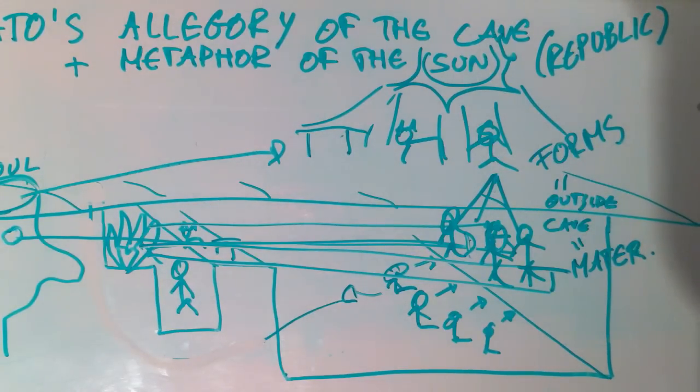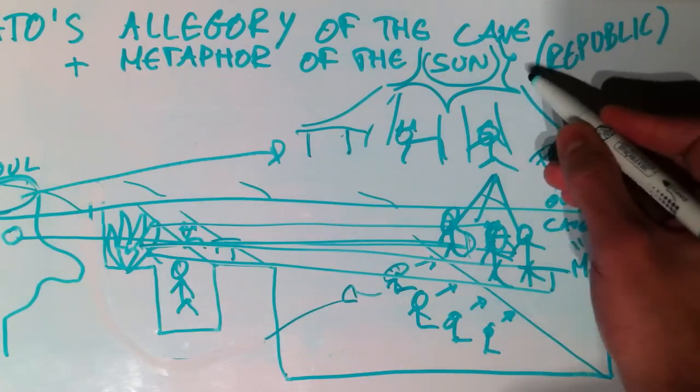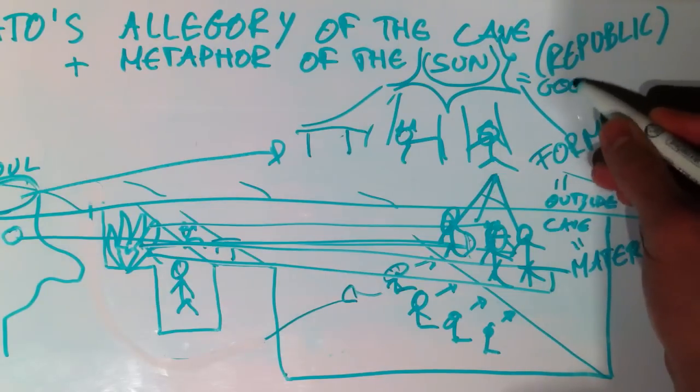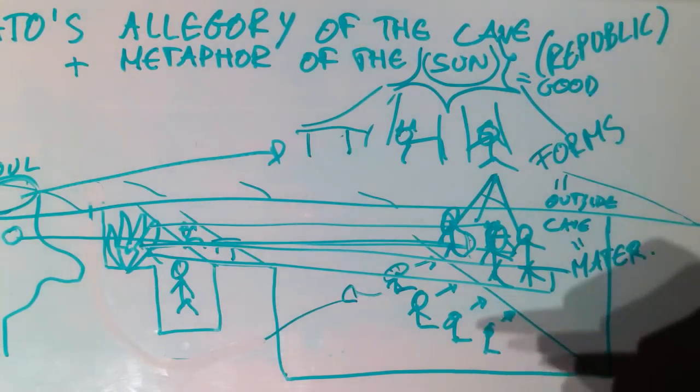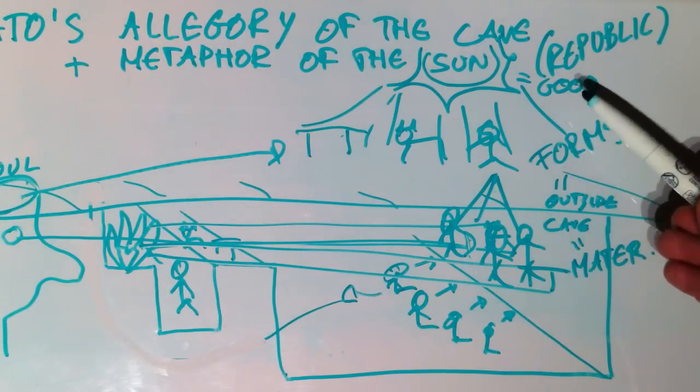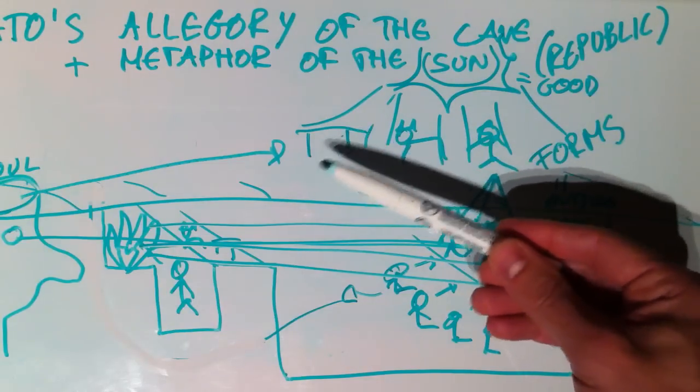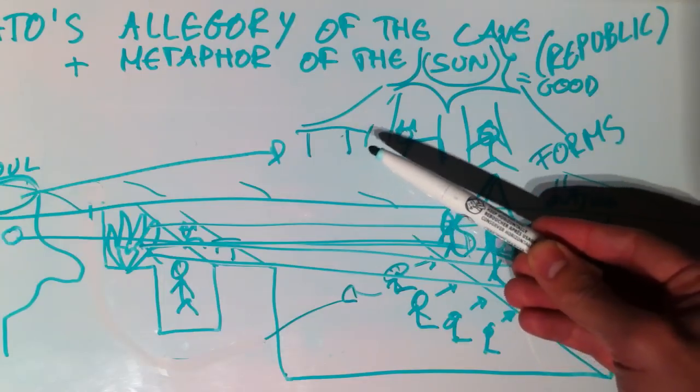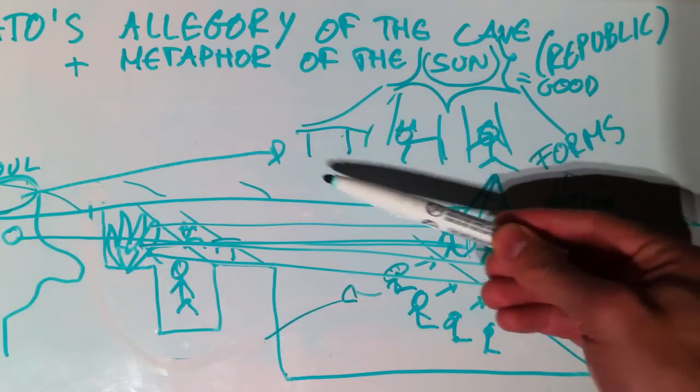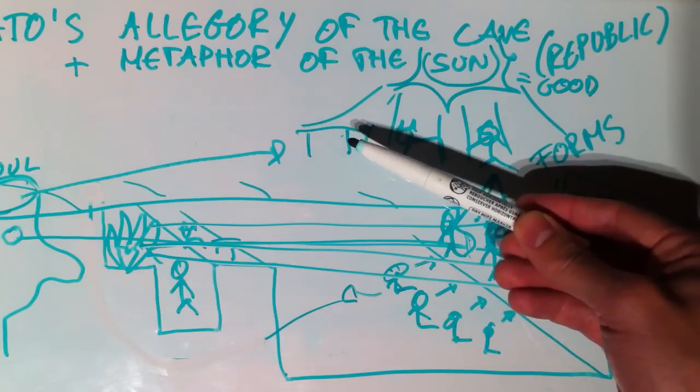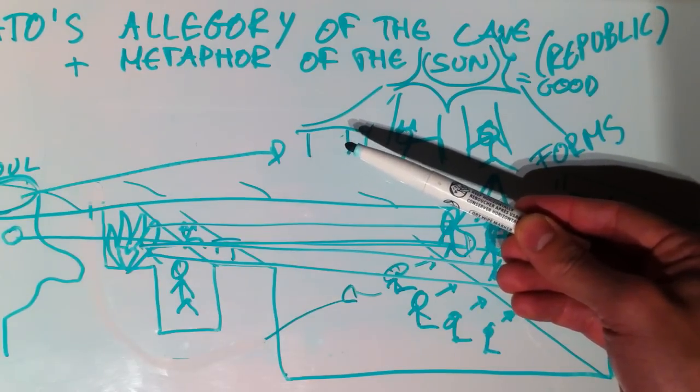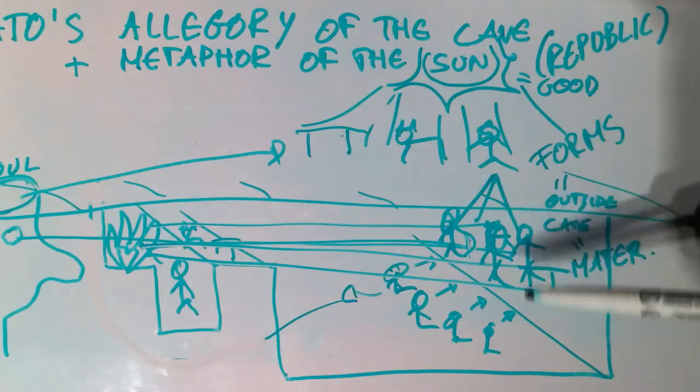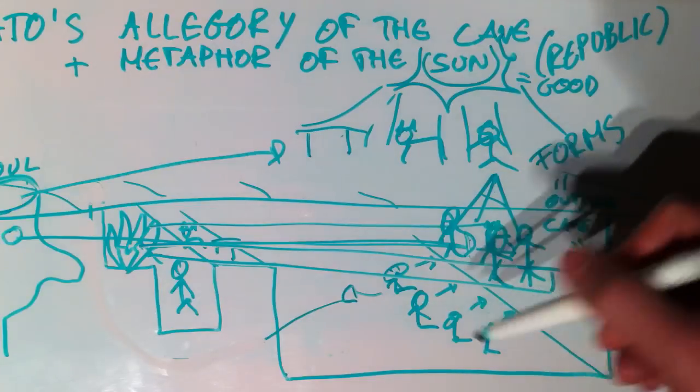And the sun for Plato is actually a metaphor for the idea of the good. We talked about the idea of the good. I said, tableness and humanness, they all have goodness in them. Because the form or the idea of the table, that is exactly what it means to be a good table. It's the perfect table. These tables here are all imperfect.